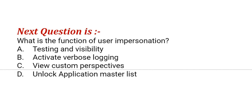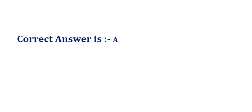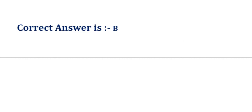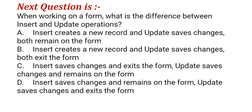Our next question is: what is the function of user impersonation? The options are: option A, the human readable labels and language settings; option B, the definition of each table and column; option C, the information of how tables relate to each other; option D, the language directory used for spell checking. The correct answer is option B.